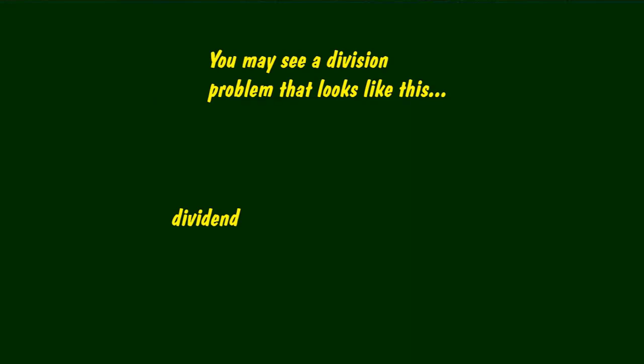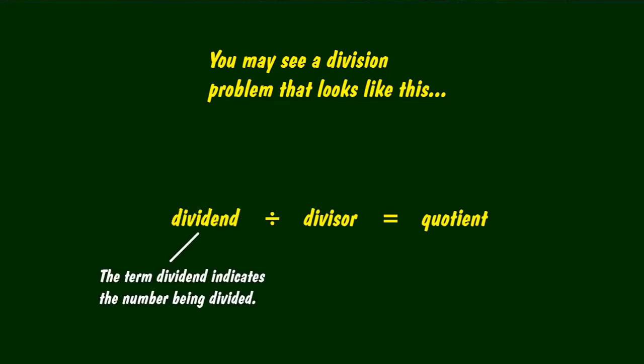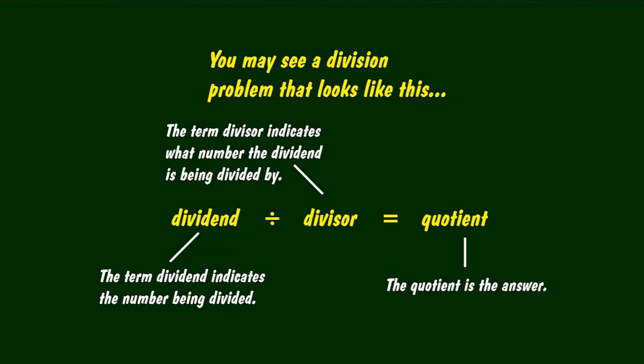You may see a division problem that looks like this. The term dividend indicates the number being divided. The term divisor indicates what number the dividend is being divided by. And the quotient is the answer.